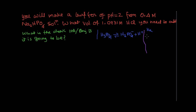The Ka of this phosphoric acid is 7.5 times 10 to the power minus 3, and the pKa value of this becomes 2.12. This is also an acid, so that is going to dissociate as well.